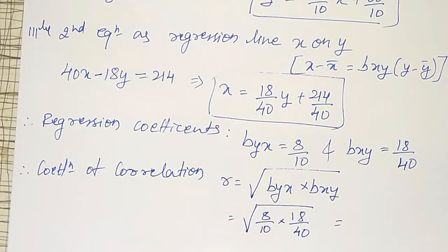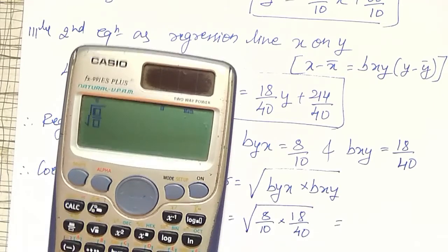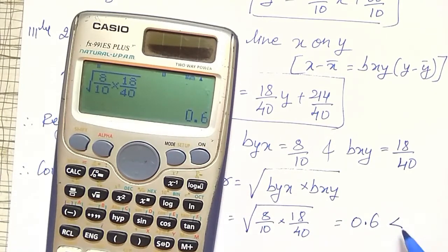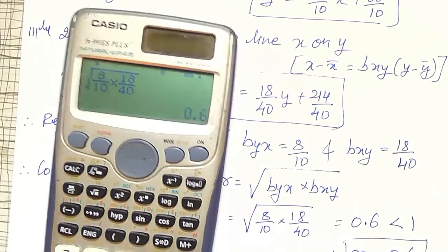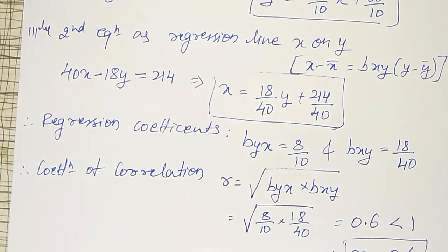Using the calculator in first mode: square root of (8 divided by 10) into (18 divided by 40) equals 3/5 = 0.6. We have to check that it is less than +1 and greater than −1. Therefore, R = 0.6 is the required answer. Also, you can observe that both regression coefficients are positive, so the coefficient of correlation is also positive.